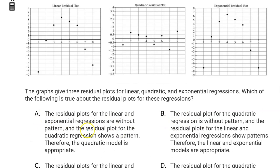Let us read through the answer choices one by one. Option A. The residual plots for the linear and exponential regressions are without pattern. I don't need to read any further. The linear plot has a pattern. It goes up and comes down. So does the exponential plot. So A is already false. Option B. The residual plot for the quadratic regression is without pattern. So far, so good. And the residual plots for the linear and exponential regressions show patterns. They do. Therefore, the linear and exponential models are appropriate. No! Wait a minute.